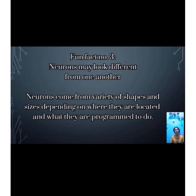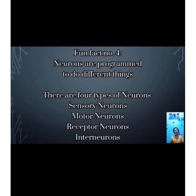Fun fact number three: Neurons may look different from one another. Neurons come in a variety of shapes and sizes depending on their location and function. Sensory neurons have dendrites on both ends connected by a long axon with a cell body in the middle, while motor neurons have a cell body on one end and dendrites on the other with a long axon in the middle. Fun fact number four: Neurons are programmed to do different things. There are four types of neurons: sensory, motor, receptor, and interneurons. Sensory neurons deliver signals from the body's outer parts to the CNS. Motor neurons carry signals from the CNS outward. Receptor neurons sense the environment and convert it into electrochemical energy sent by sensory neurons. Interneurons send messages from one neuron to another.